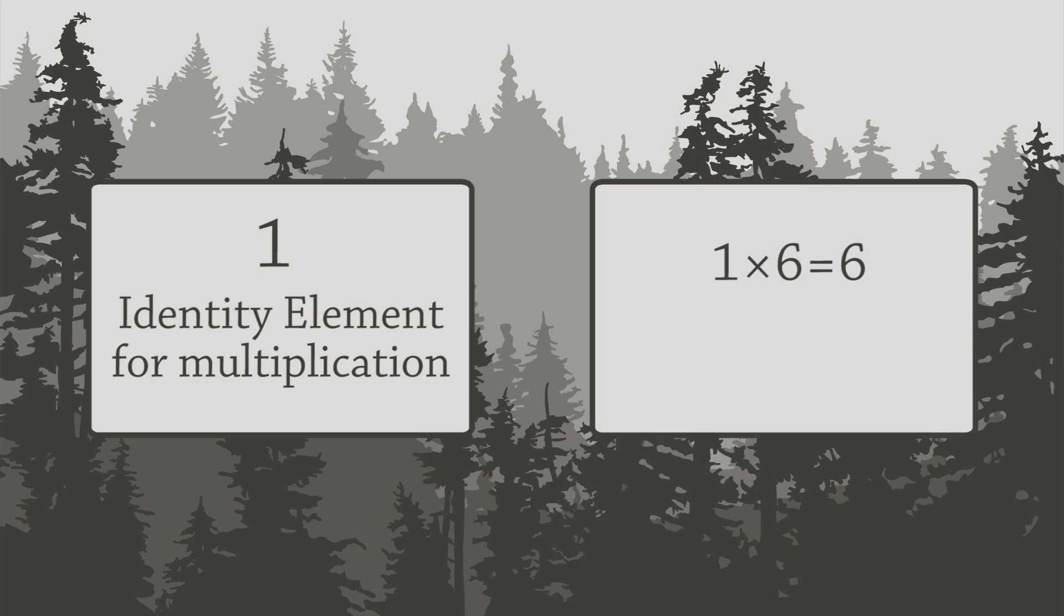For example, 1 times 6 equals 6, and negative 5 times 1 is negative 5. Multiplying by 1 doesn't change the number.